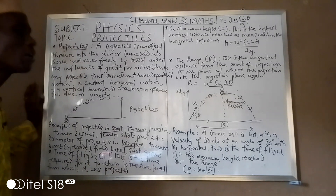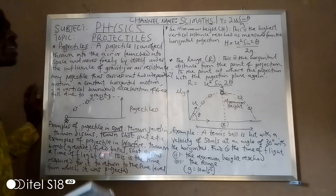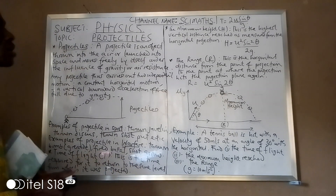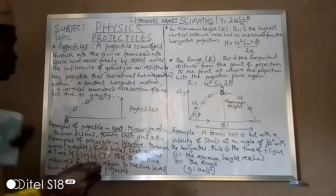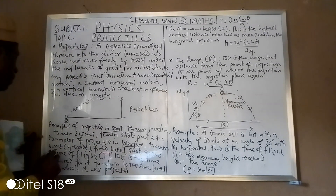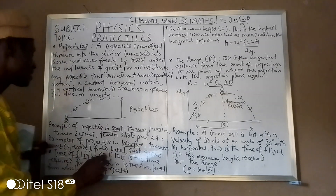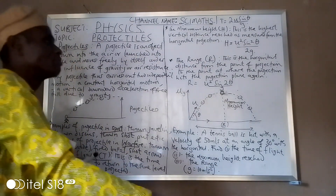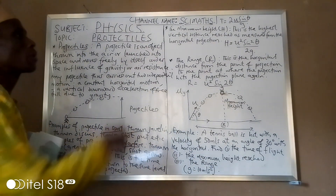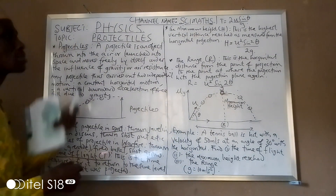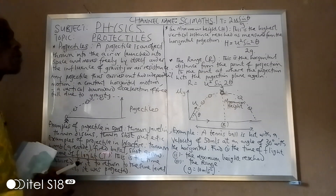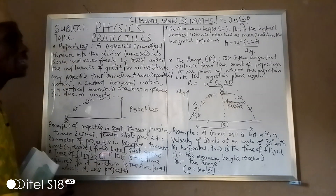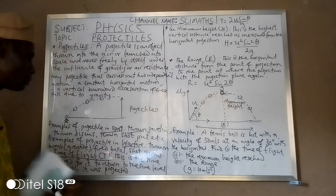Having said that, what are some of the key things we have to know under this topic? We have what is called: time of flight, maximum height, and the range. Let's take them one by one.